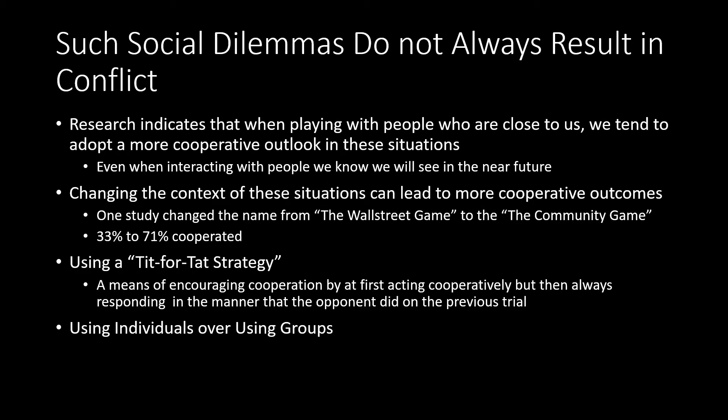Social dilemmas don't always result in conflict. One key way to encourage cooperative behavior is when people are engaged in these situations with people they know — family, friends, acquaintances. People tend to be much more cooperative with known individuals than with strangers. They also act more cooperatively when they know they will be interacting with those same people in the future, and the more likely that future interaction, the more cooperative they tend to be.